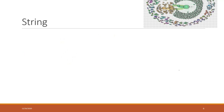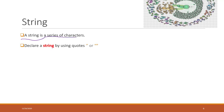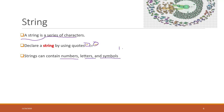In Python, to define a string — which is a series of characters — we can use a pair of single quotation marks or a pair of double quotation marks; it doesn't matter which one you use. Strings can contain numbers, letters, and symbols. For example, 'a' is a string, '1' is also a string, and '@' is also a string.